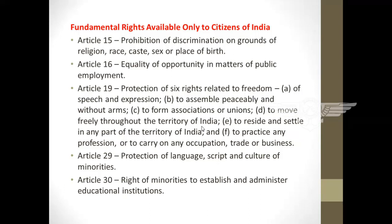The six rights under Article 19 are: right to speech and expression, right to assemble peacefully without arms, right to form an association or union, right to move freely throughout the territory of India, right to reside and settle in any part of India, and right to practice any profession or carry on any occupation, trade or business — clauses 19(a) through 19(f).